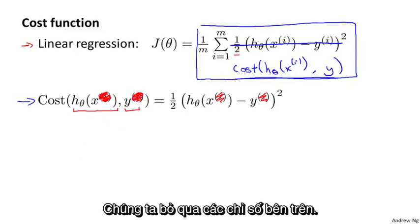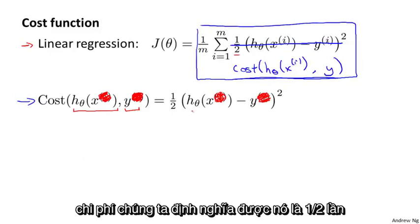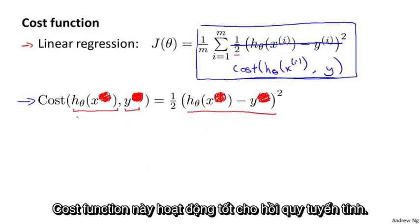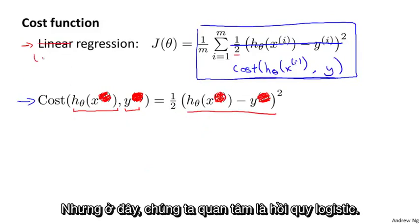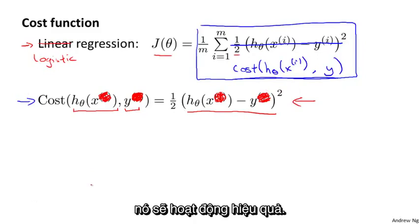For linear regression this cost function worked fine, but here we're interested in logistic regression. If we could minimize this cost function plugged into J, that would work okay. But it turns out that if we use this particular cost function, it would be a non-convex function of the parameters theta.